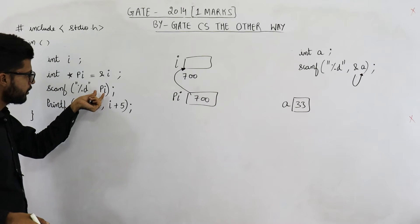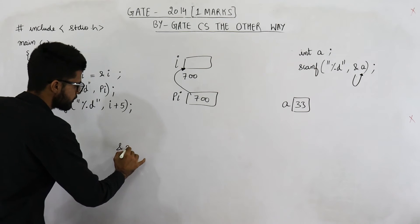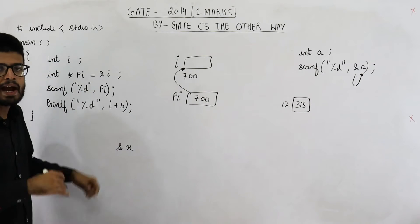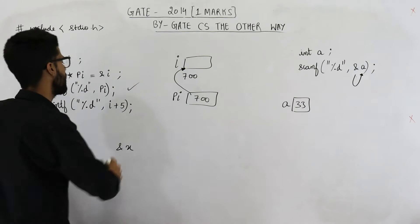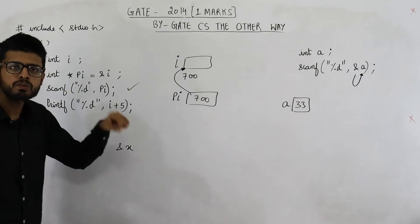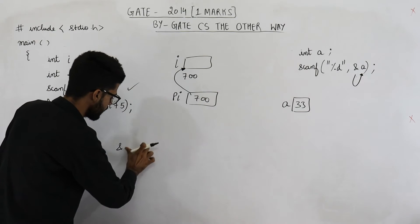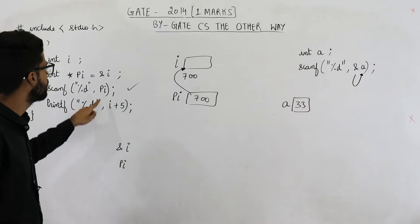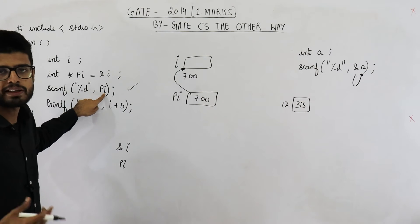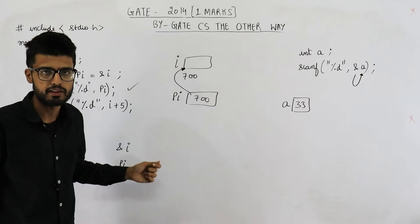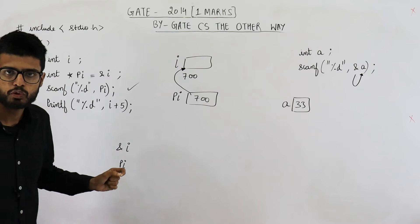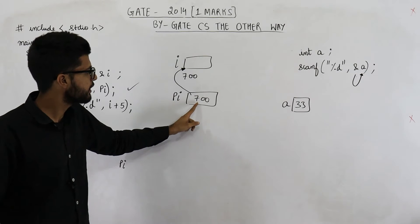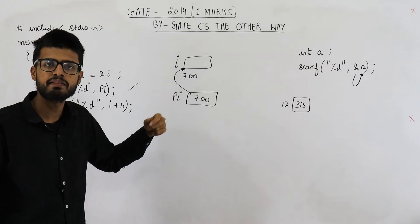See normally we write something like this here: scanf %d & variable name. Here you haven't used & operator but still it will work. There is no error in this line because pi also contains the address of i. So if you write like this or you simply write pi, both are one and the same thing. So here we have passed the address of variable called i. See pi contains the address of i. Hence we want an integer type input from user and whatever user types that has to be saved in this address. So pi contains 700, that means whatever user enters save it at address 700.